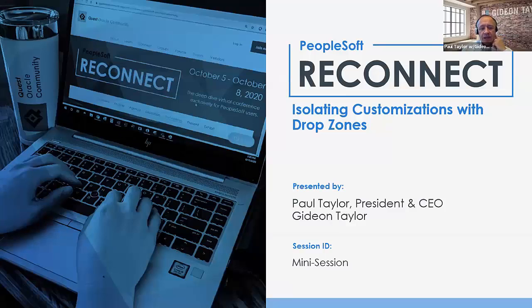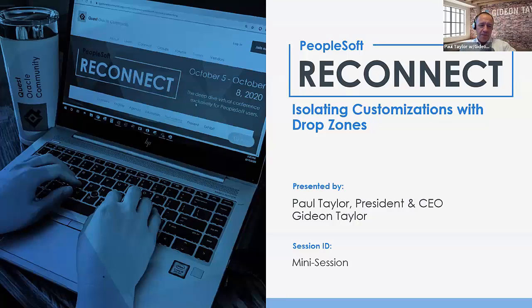Event mapping is one of the big three. We may be expanding to the big four now that we have the new configuration-based tool for app engines. But the big three of how to isolate customizations are page and field configurator, event mapping, and drop zones.